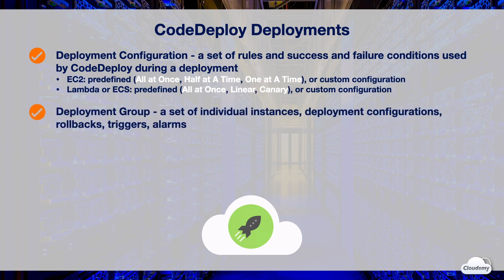A deployment group contains a set of individual instances and deployment configurations, as well as rollbacks, triggers, and alarms. You can specify multiple deployment groups for a CodeDeploy application, and each application deployment uses one of its deployment groups. For EC2 deployments, a deployment group contains a set of EC2 instances targeted for deployment. For Lambda deployments, a deployment group defines a set of CodeDeploy configurations for deployments. For ECS deployments, a deployment group specifies the ECS cluster, load balancer, and target groups. It also specifies when to re-route traffic to the replacement task set and when to terminate the original task set after a successful deployment.